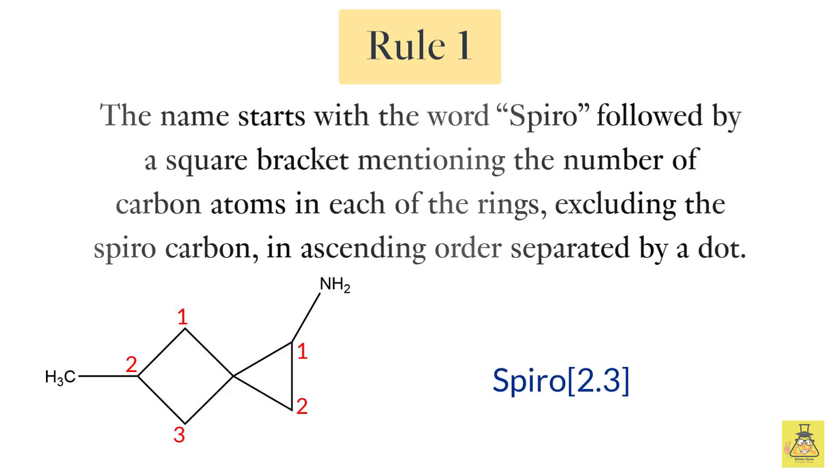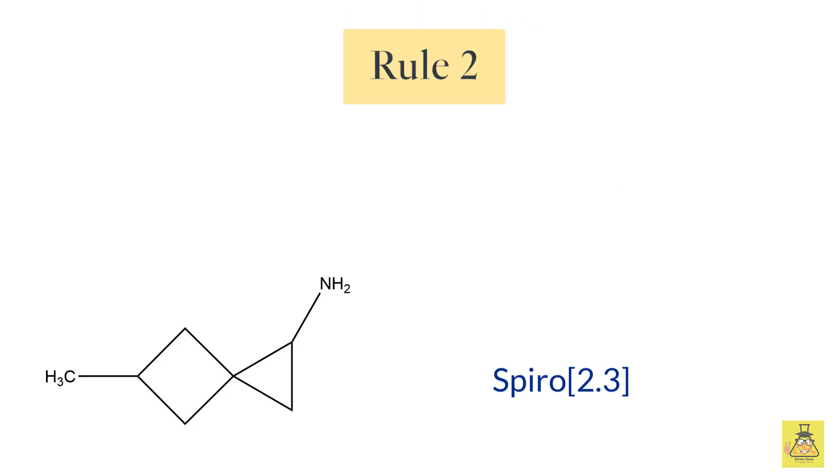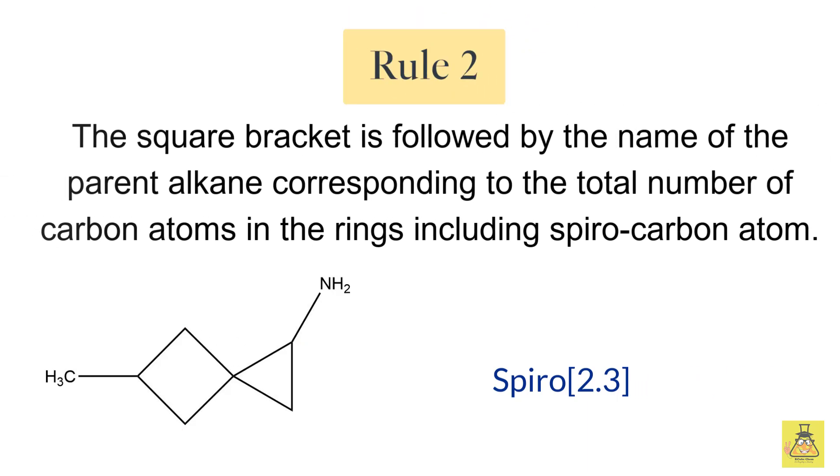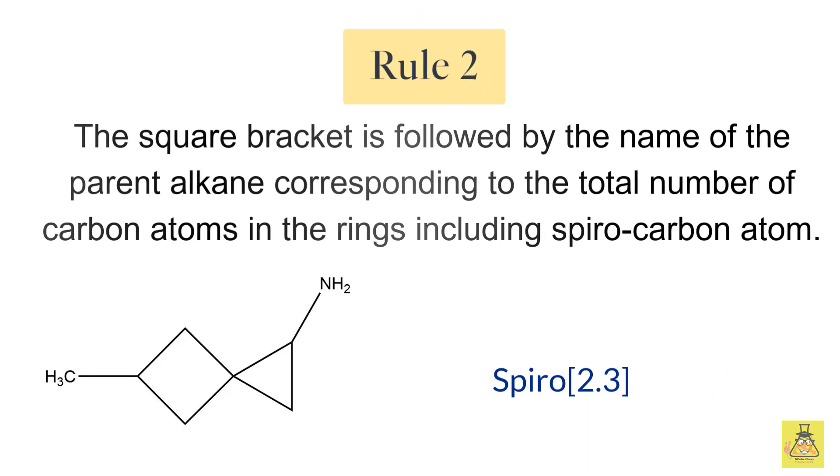Rule two: the square bracket is followed by the name of the parent alkane, which corresponds to the total number of carbon atoms in the ring including the spiro carbon. Using the same example, the molecule here has six carbon atoms in the ring, hence the parent is hexane. Thus after the square bracket we will add the word hexane to make it spiro [2.3]hexane.